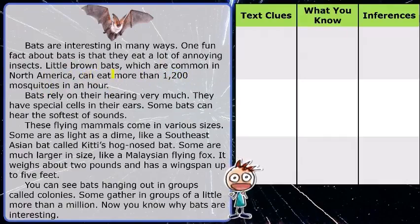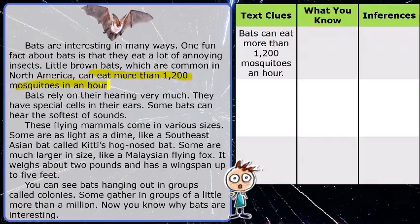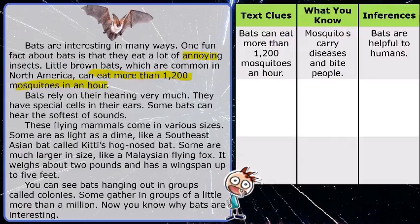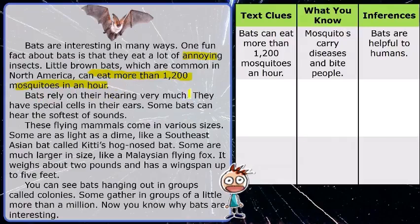So this would be a good thing to put into the graphic organizer: that some bats can eat more than 1,200 mosquitoes in an hour. Now what do we know about mosquitoes? We know they're annoying — nobody likes mosquitoes. Some of you may know mosquitoes carry diseases like the Zika virus. So if bats are eating mosquitoes that carry diseases, we can infer that bats can be helpful to humans.